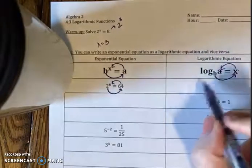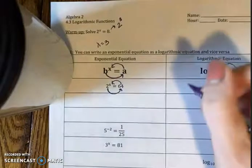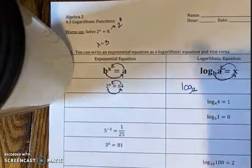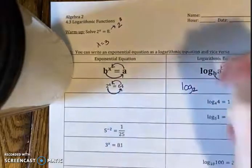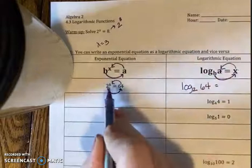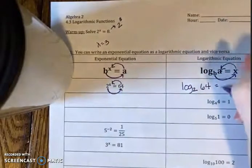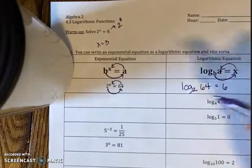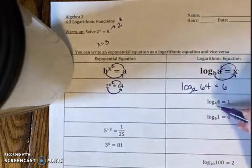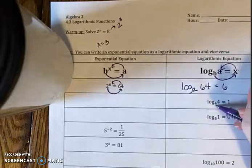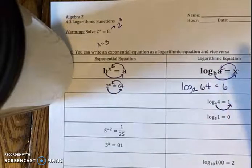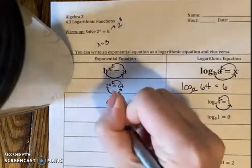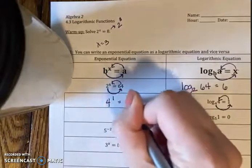That tells me the order that I'm going to plug it in to my logarithm. So it's log base b, the base was 2, of a, which was 64, gives me x, the exponent 6. Now let's try going from the logarithm to the exponent. 4 to the power of 1 will give me 4.